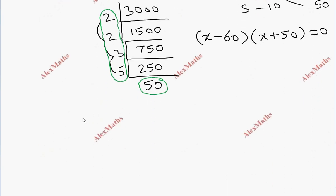So x minus 60 equals zero or x plus 50 equals zero. This gives x equals 60 or x equals minus 50. Since x is speed, negative is not possible, so we ignore it.